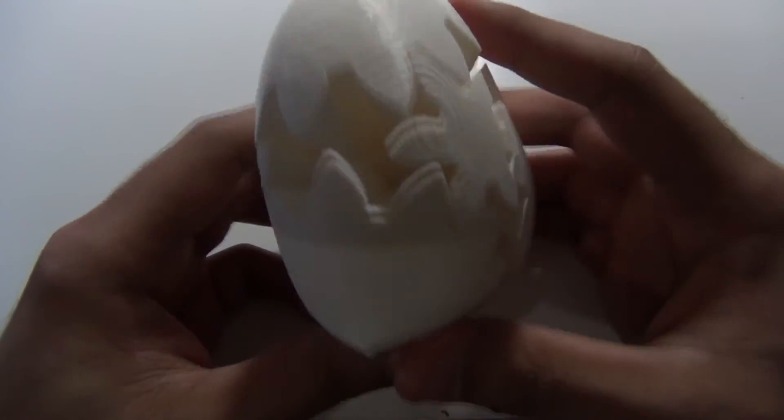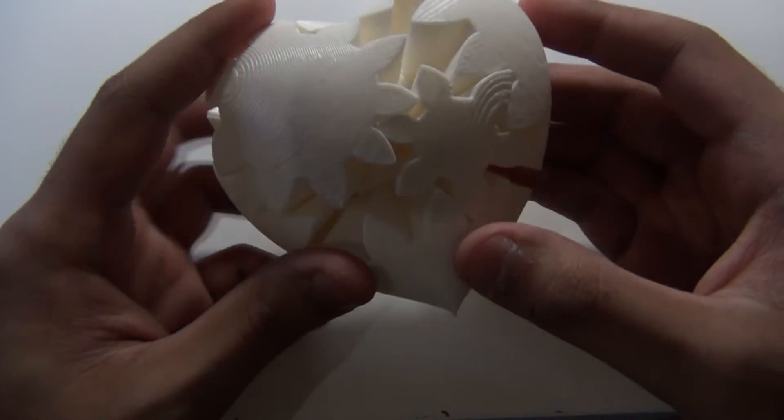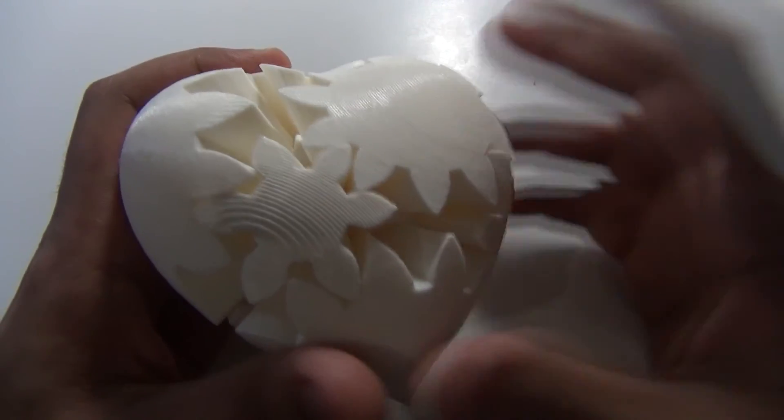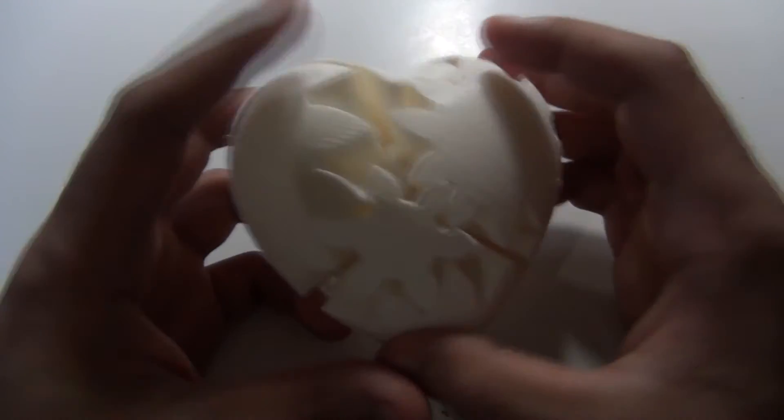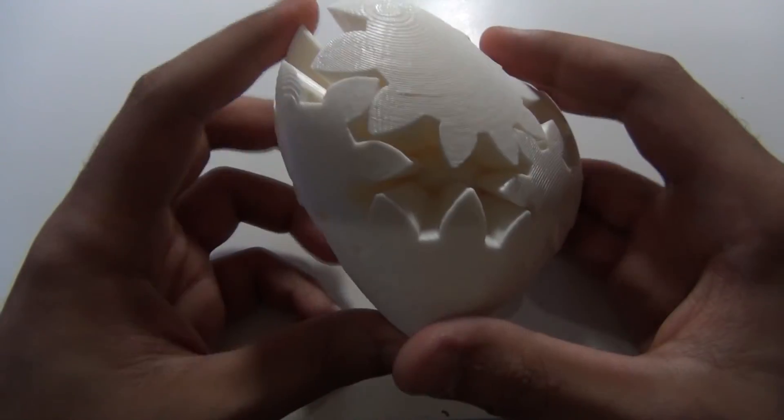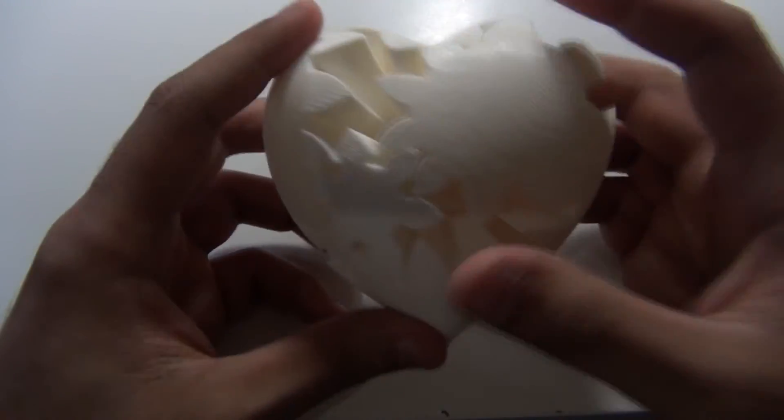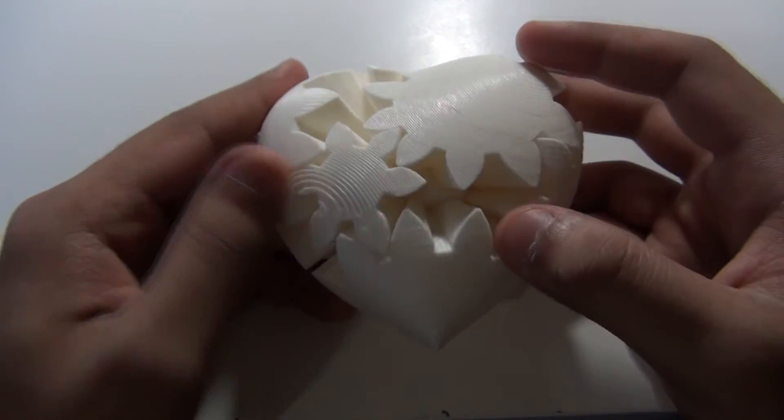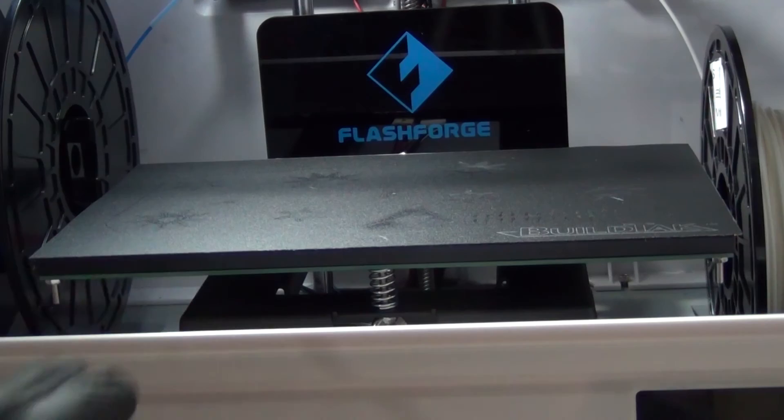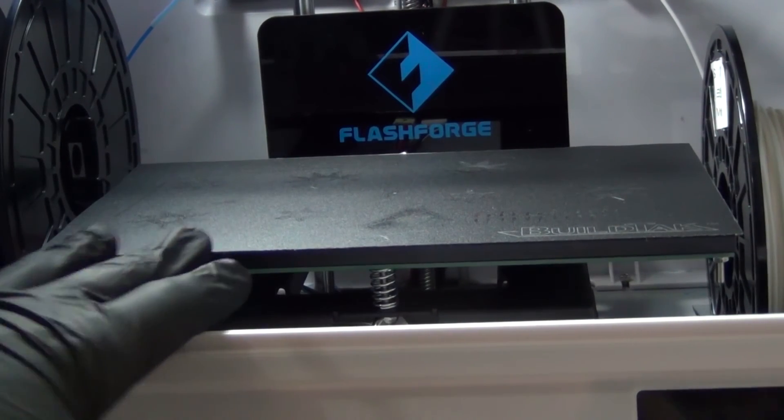Now I did put the print bed to about 110 degrees and the extruder to about 135 degrees. No glue, no sort of adhesive on the print bed, and it printed perfectly and it was really easy to take off.